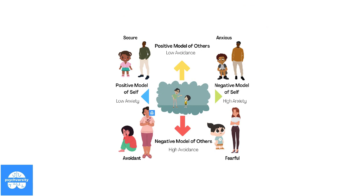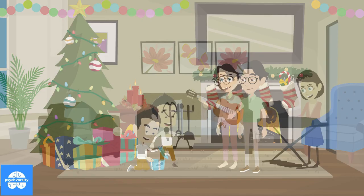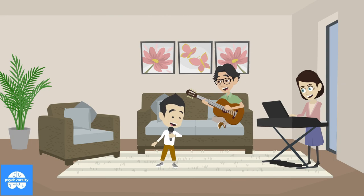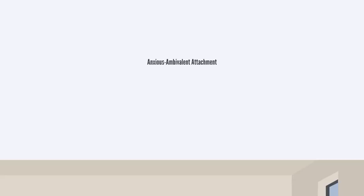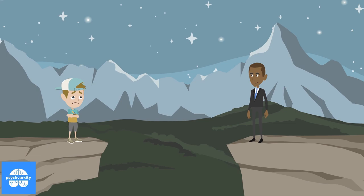John Bowlby outlines four primary types of attachment styles. Secure attachment styles are formed through a loving and healthy bond between a parent and child during infancy. Anxious-ambivalent attachment typically signifies a level of distrust between the child and their caregivers.